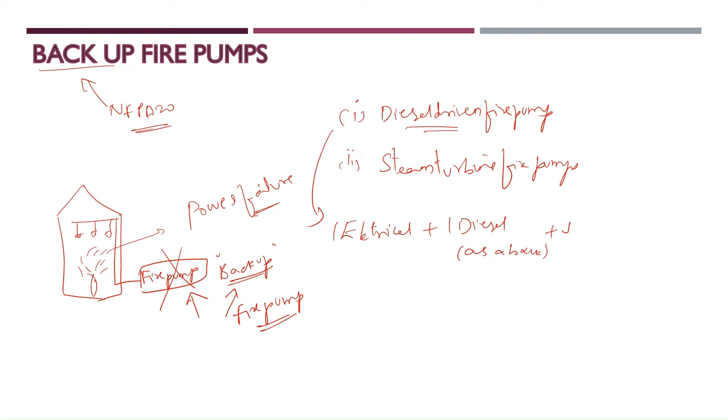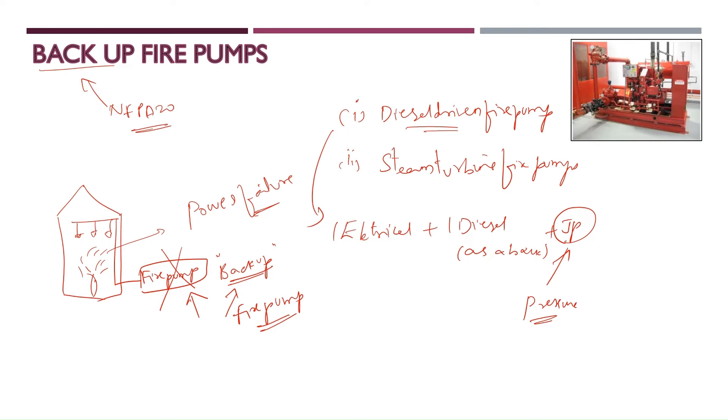That's why you will see in each and every project you will have one electric and one diesel driven fire pump as a backup. Apart from this you will have one jockey pump which is used only to maintain the pressure inside the piping.